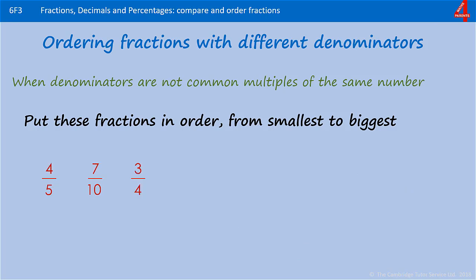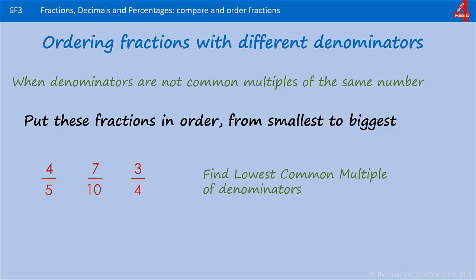This is one for you to try. Remember to find the lowest common multiple of the three denominators — pause the video and have a go. 5 and 10 are both multiples of 5, but 4 isn't. 5 and 10 will both go into 20, and so will 4, so that's our lowest common multiple. We're going to make our denominators 20. To get from 5 to 20 we multiplied by 4, so we multiply 4 by 4 to get 16 over 20.